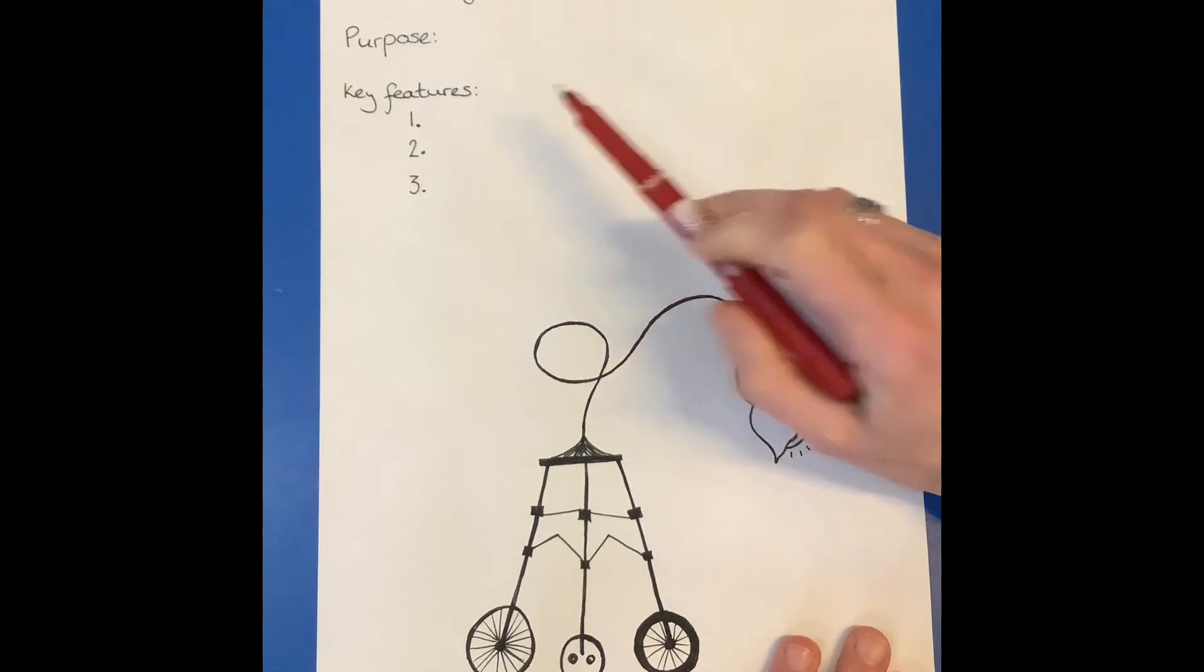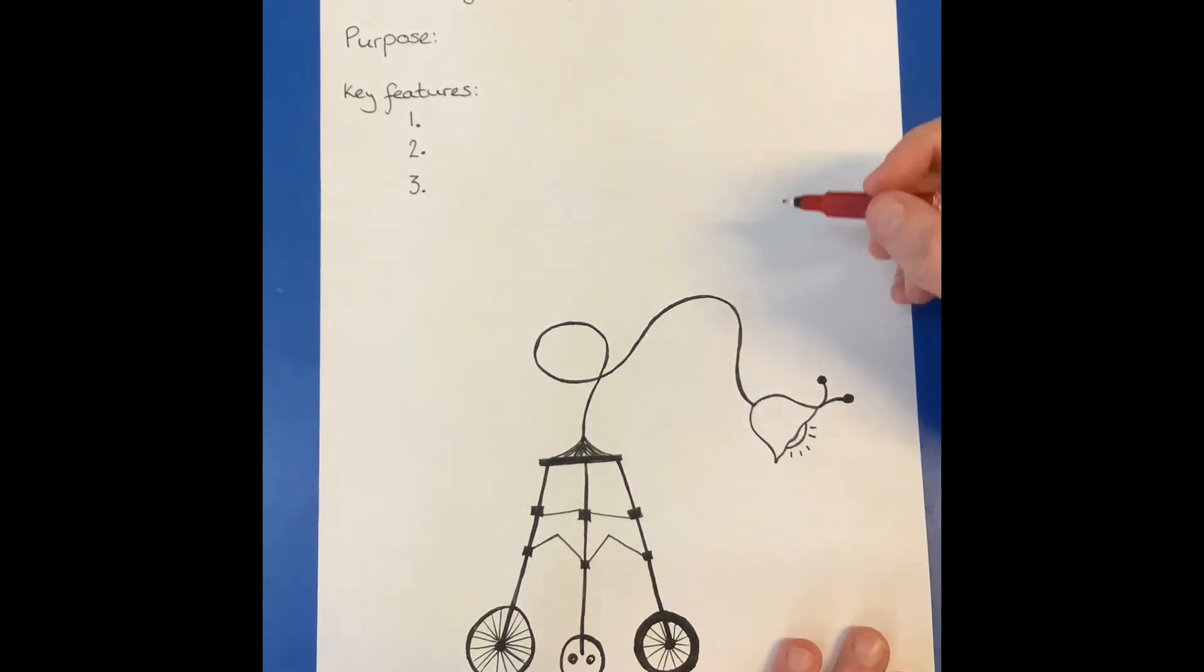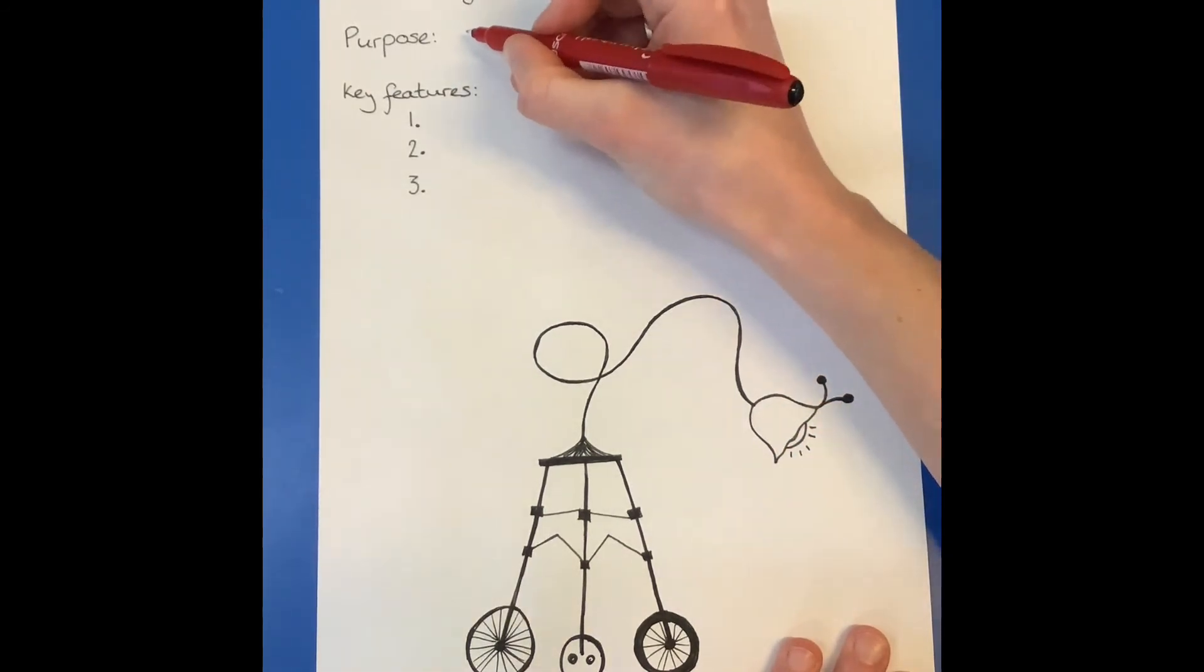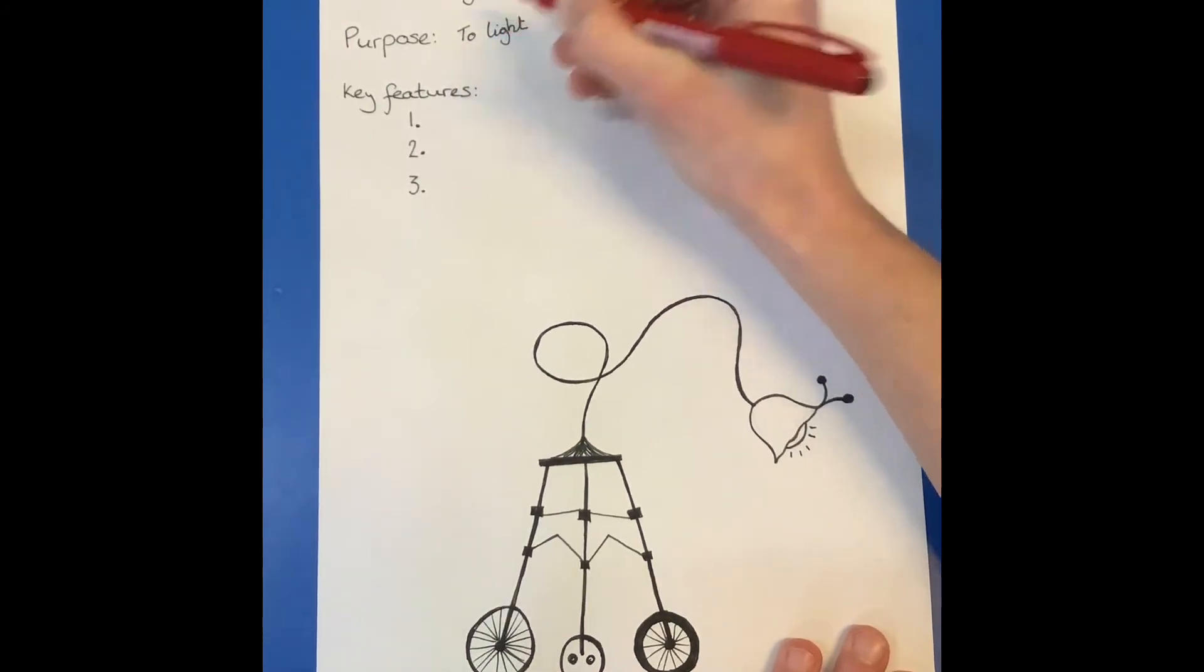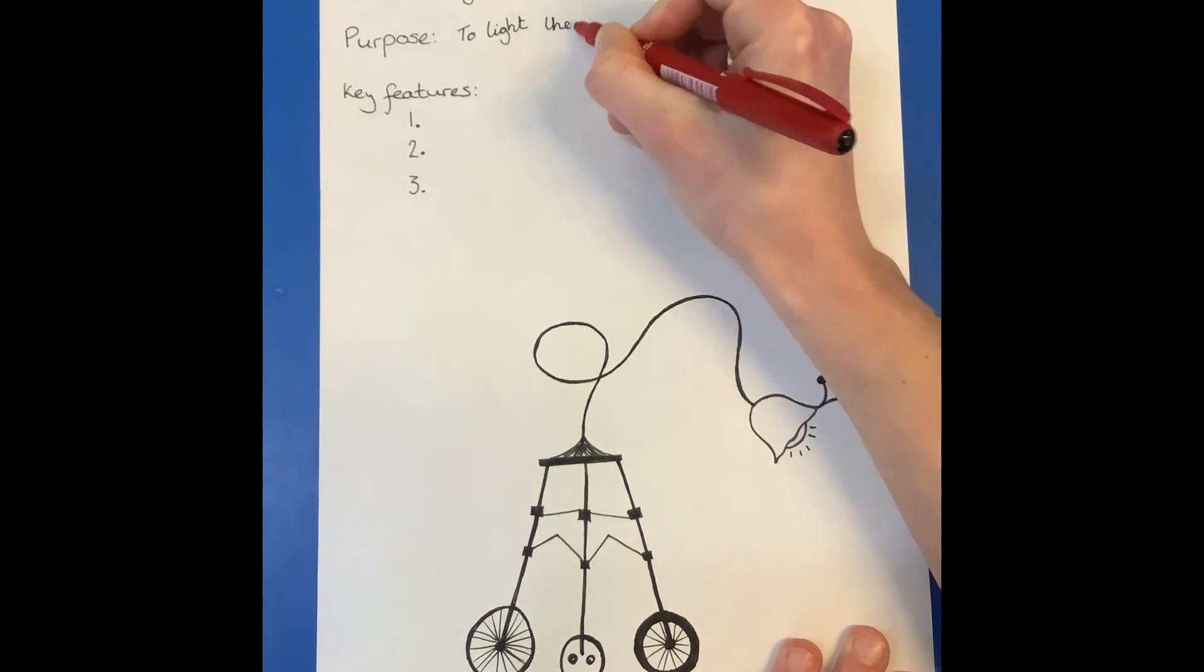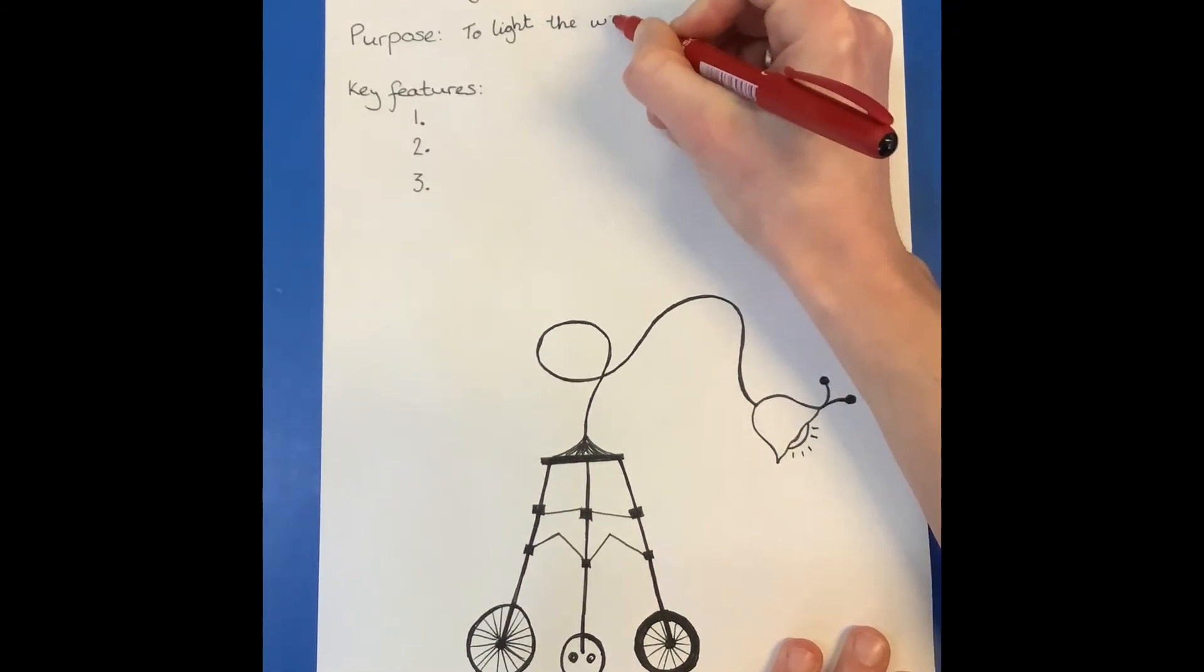And then we're going to have a think about what is the purpose of your lost thing? What does it do? So mine has this lamp section. So I'm going to say its purpose is to light the way. Okay.